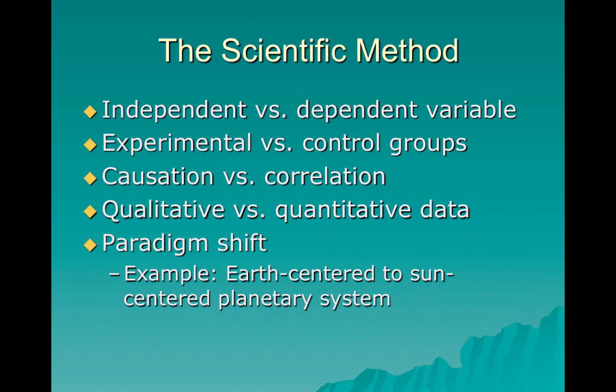Qualitative data is words; quantitative data is numbers. Sometimes these studies produce what's called a paradigm shift — a complete refocusing of how we understand the natural world. For example, when we used to think the Earth was the center of the universe, and now we know the sun is.